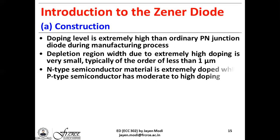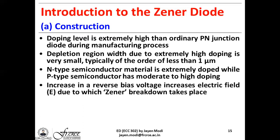From the construction viewpoint, the doping level is kept extremely high compared to an ordinary PN junction diode. The depletion region width due to this extremely high doping is typically very small, usually less than one micrometer. The N-type semiconductor material is very heavily doped with a large number of pentavalent atoms, while the P-type can have moderate to high doping. Increasing the reverse bias voltage increases the electric field, causing a phenomenon called Zener breakdown.